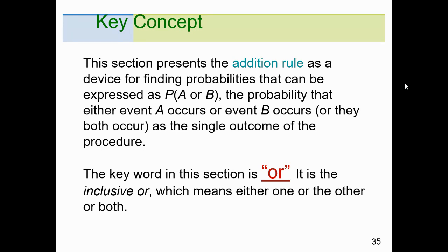On an exam, the first thing you need to do is read the problem and ask: is this an 'and' or an 'or' problem? If it's 'and,' sometimes the word will be there, but most times it's just implied. When it's an 'or' problem, they'll specifically say the word 'or.' If it's 'and,' you're multiplying. If it's 'or,' you're adding.